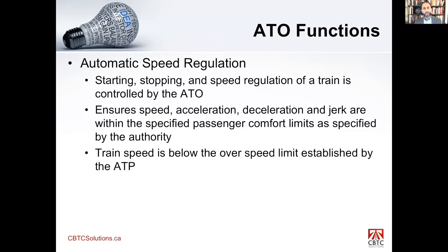There is a tolerance the ATP allows the ATO: the speed limit is 60 km/h, and the train can go slightly above it, but ATP will brake it back below. If ATP cannot bring the train back below the speed limit, it will emergency brake the train immediately. Automatic speed regulation also controls how hard the train accelerates, how hard it decelerates, and the jerk that passengers will feel — this is where ride quality and passenger comfort come into play. Suppliers tune the ASC speed profile for smooth acceleration and braking.